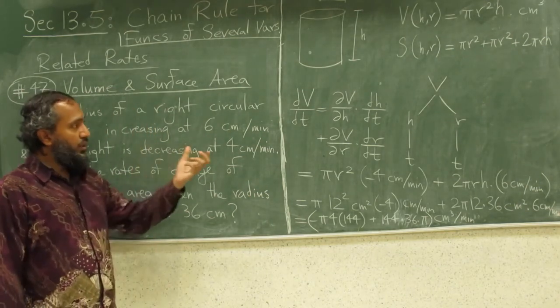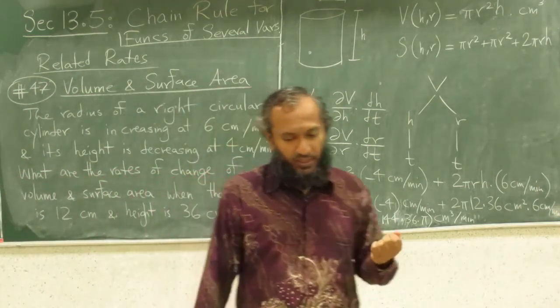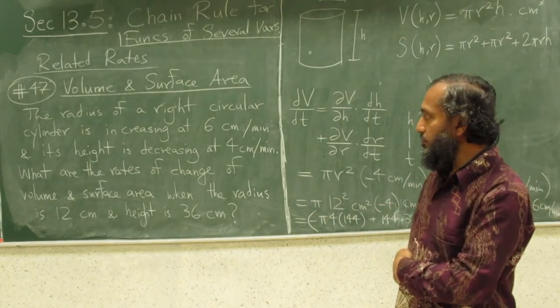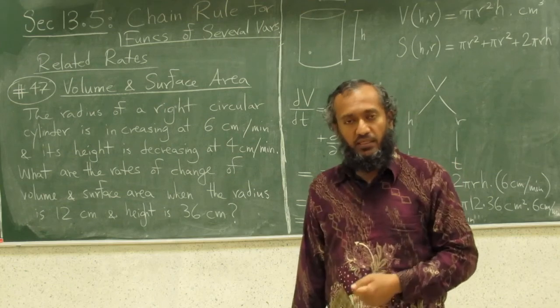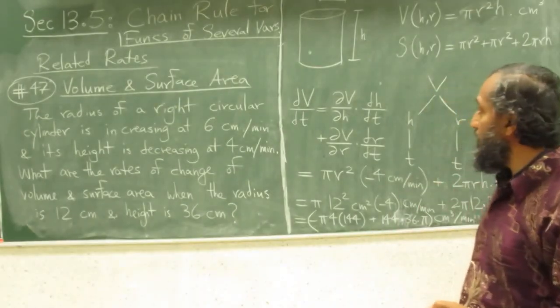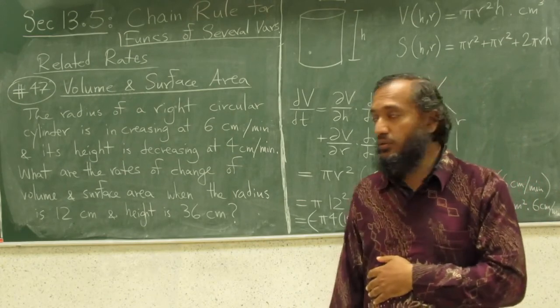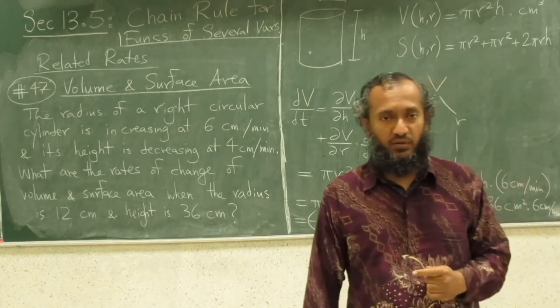You could do the same with the surface area. This is an example of a related rates applied problem where we used the idea of a chain rule to make our calculation easier and systematic. That finishes for us section 13.5, which is chain rules for functions of several variables and how this could be used for solving various problems.